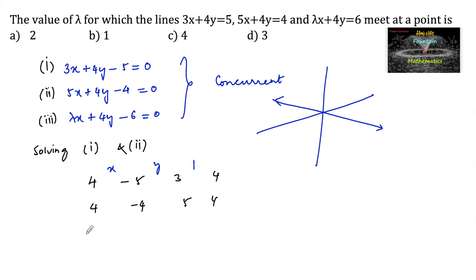Then we can write x upon cross multiplication 4 into minus 4, that is minus 16, minus 4 into minus 5 is plus 20, so minus 16 plus 20 equals y upon minus 5 into 5 that is minus 25 minus of minus 4 into 3, negative of negative becomes plus 12, which equals 1 upon 3 times 4 is 12, 12 minus 20.